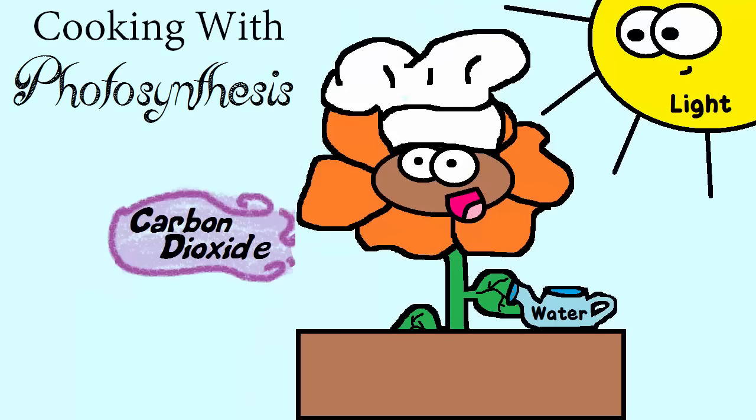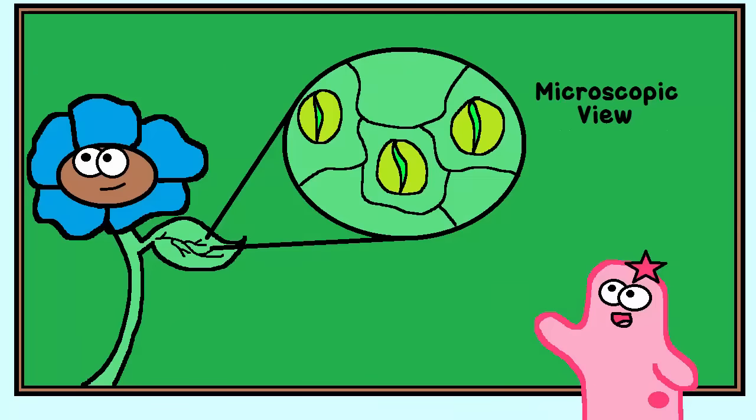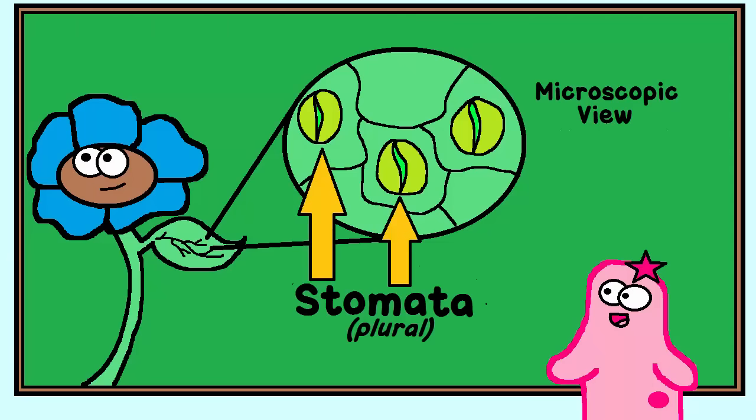For photosynthesis, plants need the gas CO2, carbon dioxide. This is the gas, conveniently, that we exhale, which means that we breathe this gas out. Many plants have these fascinating little openings—pores, really—called stomata.